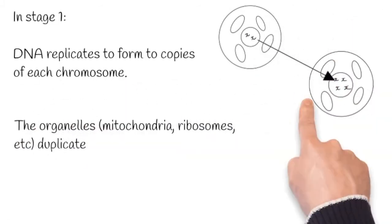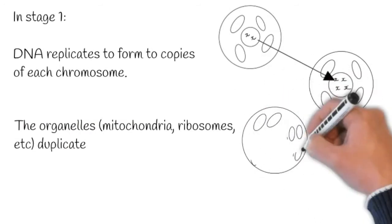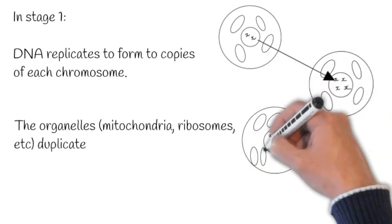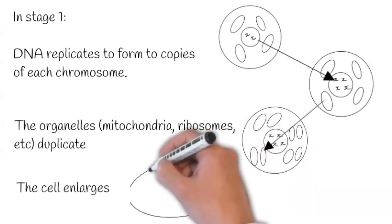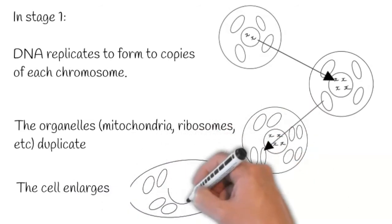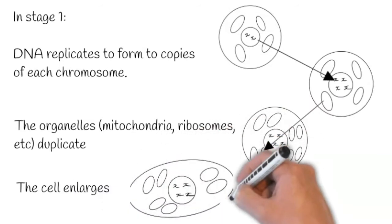The organelles - mitochondria, ribosomes, etc. - duplicate. Again, we've gone from four mitochondria to eight mitochondria. The cell also enlarges, it gets bigger, ready for division.